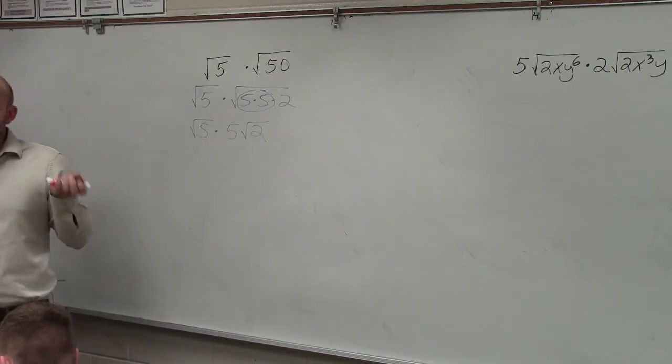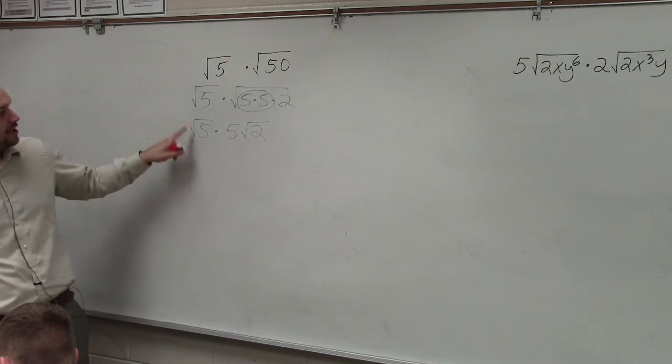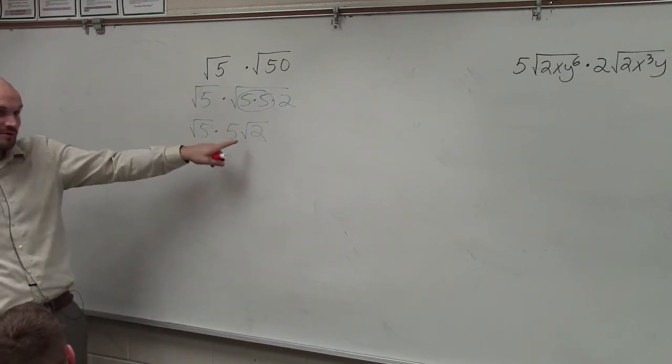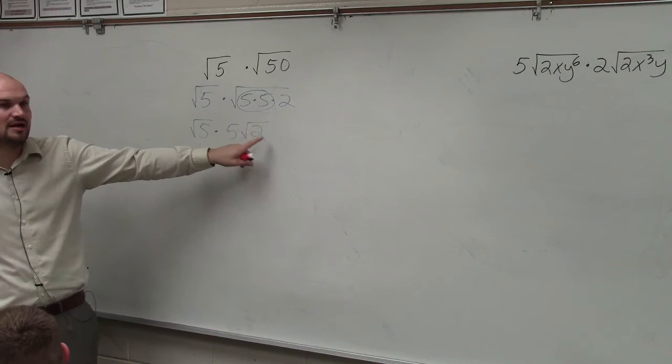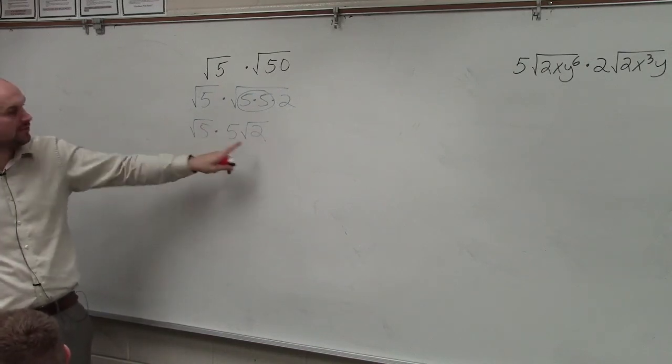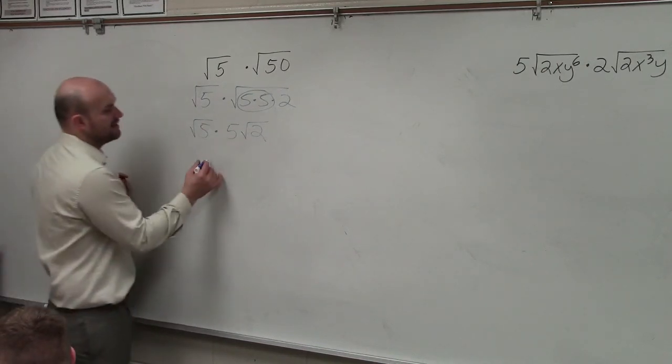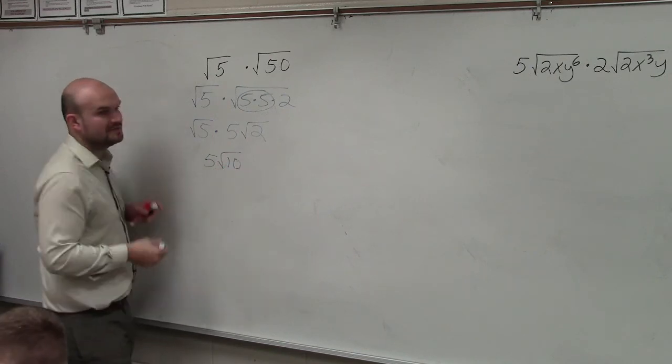Now remember with multiplication, what we said with multiplication, as long as the roots are the same, these are both square roots, I can simply multiply the numbers on the inside and numbers on the outside. Well, here I only have a 5, so I'm going to have 5 times the square root of 10.